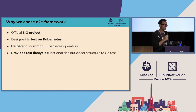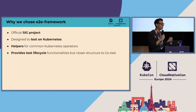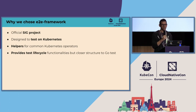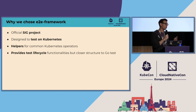When we saw the E2E framework, we did a POC, wrote a proposal, and everyone was on board. We liked that it's an official SIG project designed from the ground up to test on Kubernetes, that it already has a lot of helper functions to interact with clusters, that it provides enough components to create your own test suite, and that it's very close to pure Go testing.